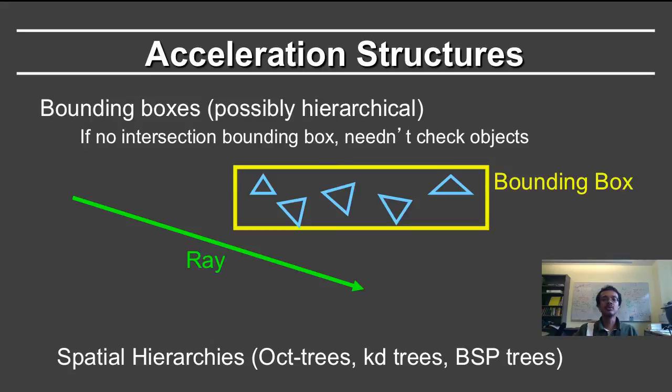If the ray doesn't intersect the entire bounding box, and remember there are very efficient ray-box intersection tests, then one need not check the individual objects within the bounding box. One can also consider spatial hierarchies that organize these bounding boxes.